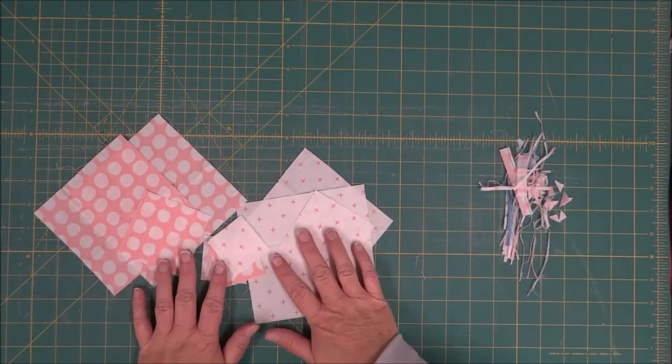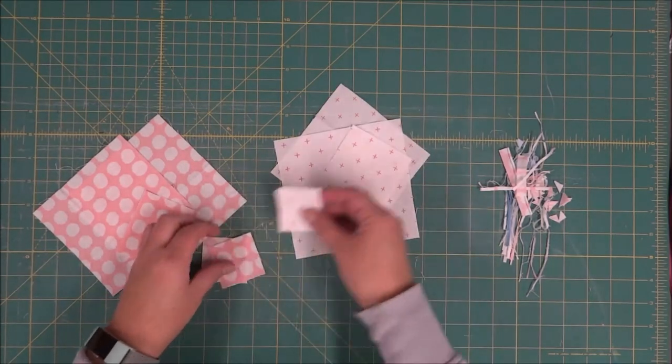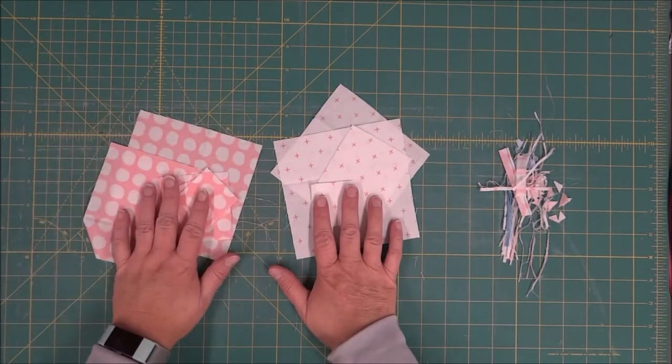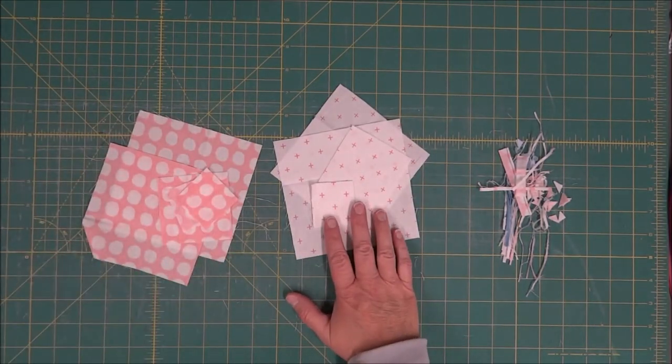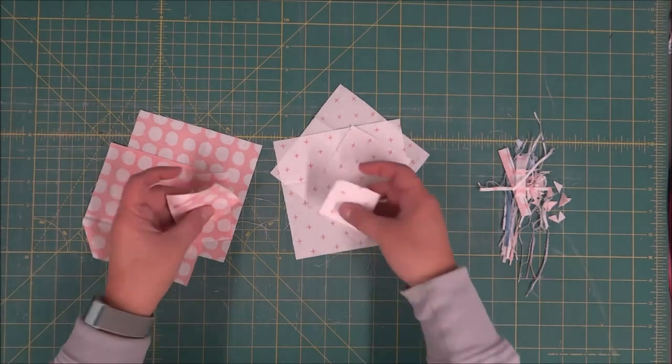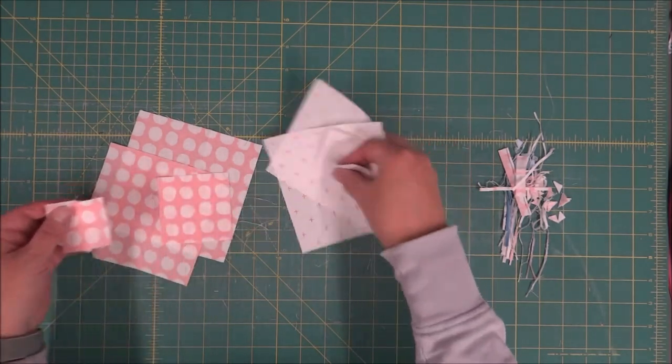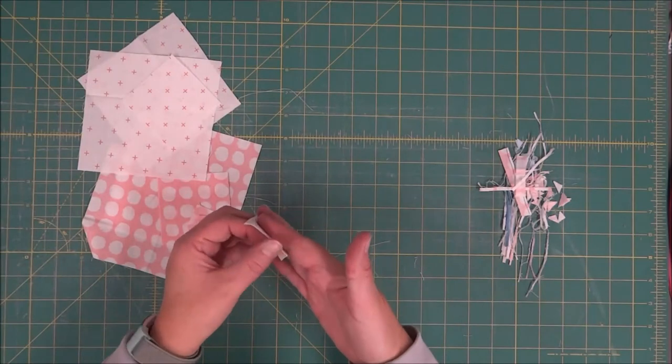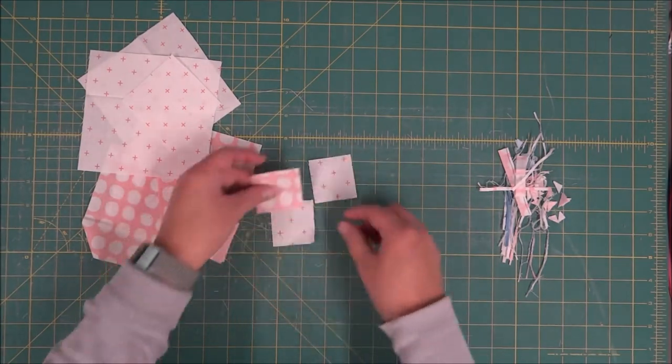Alright, so I've got all my parts and pieces cut out. I've got my background as well as my colored fabric. The first thing we're going to do is lay out a four patch using our background and our one color for the block.